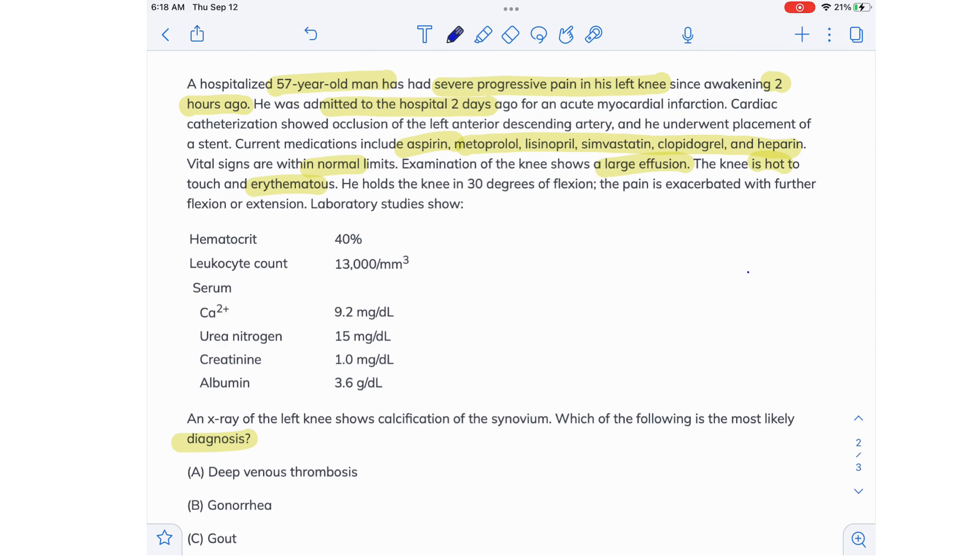Labs show a hematocrit of 40% which is normal, a white count of 13,000 which is slightly elevated. Serum calcium, urea nitrogen, creatinine, and albumin are all normal. An X-ray of the left knee shows calcification of the synovium. Which of the following is the most likely diagnosis?